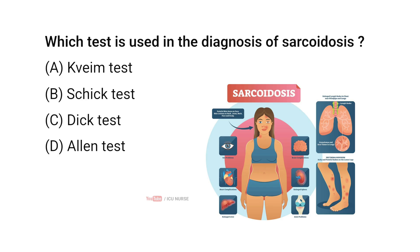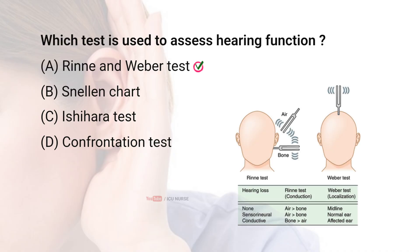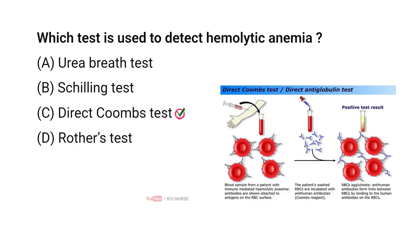Which test is used in the diagnosis of sarcoidosis? Correct answer A: Kveim test. Which test is used to assess hearing function? Correct answer A: Rinne and Weber test. Which test is used to detect hemolytic anemia? Correct answer C: Direct Coombs test.